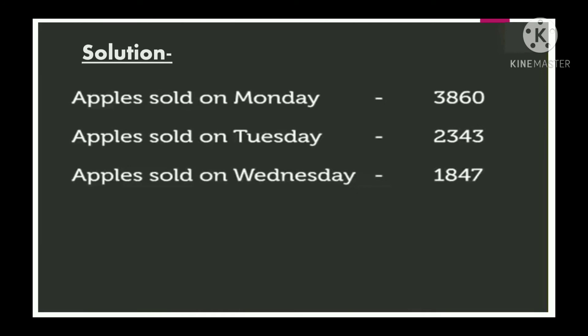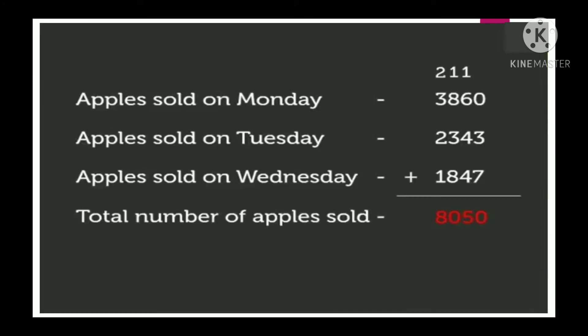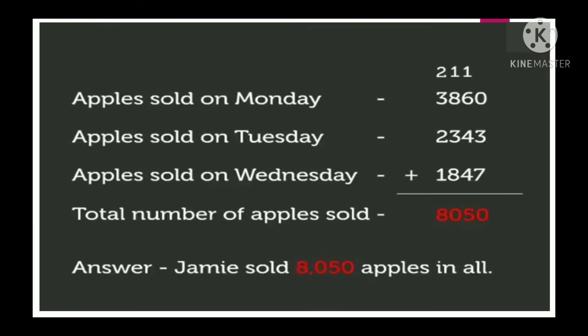First we make the statements: apples sold on Monday = 3,860; apples sold on Tuesday = 2,343; apples sold on Wednesday = 1,847. To find the total number of apples sold in 3 days we add all three numbers. After adding we get 8,050. Therefore Jamie sold 8,050 apples in all. I hope you have understood how to make statements for a word problem.